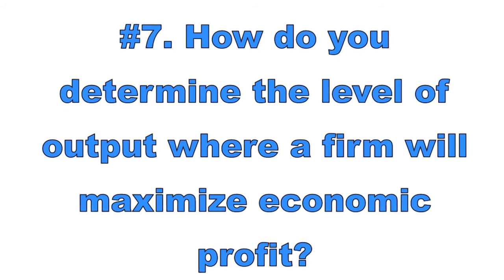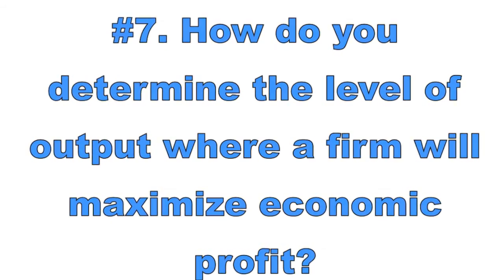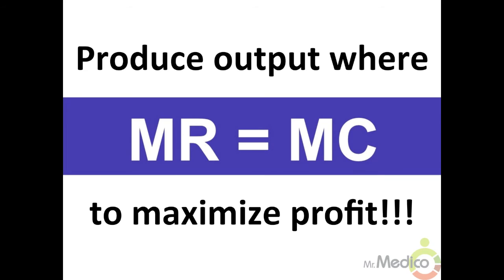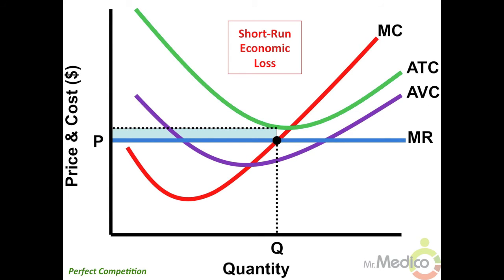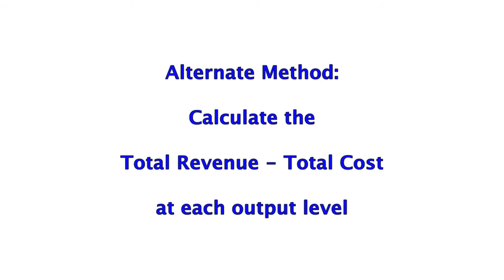Number seven: how do you determine the level of output where a firm will maximize economic profit? The profit maximization rule is that a firm should produce at a level of output where its marginal revenue equals its marginal cost, or MR equals MC. At this point, a firm will experience its greatest economic profit or minimize its economic losses. When price is greater than the average total cost at the MR equals MC output point, a firm is earning a profit. When price is less than average total cost, a firm takes a loss. You can also calculate total revenues and total costs at every level of output and find the differences to see where profits are maximized.